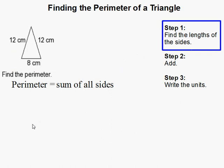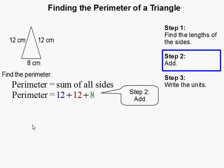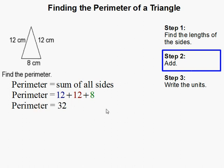So now all we have to do is add them all up. So we have 12, 12, and 8, like all we have up here. And that gives us 32.